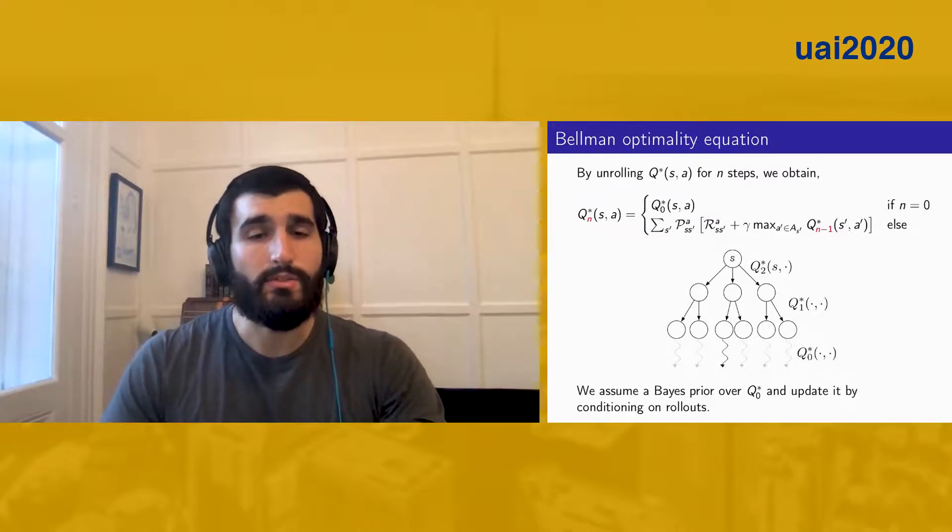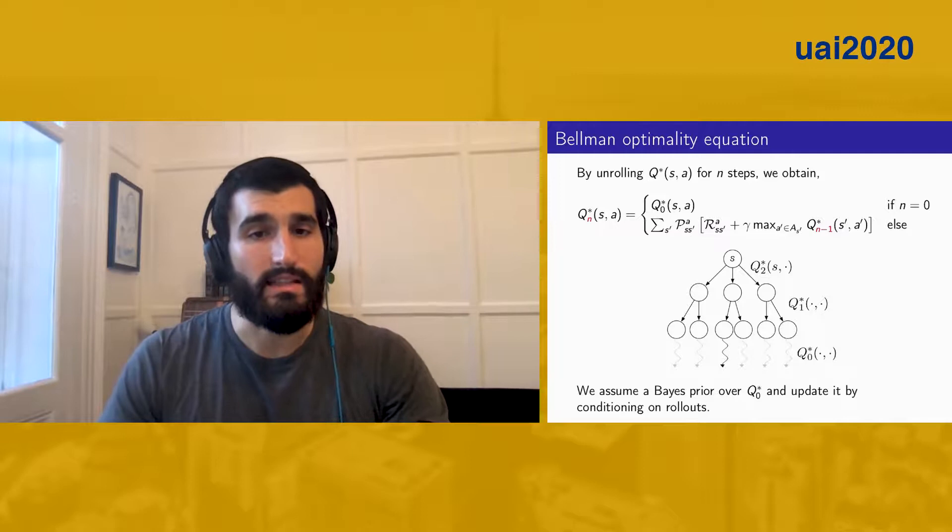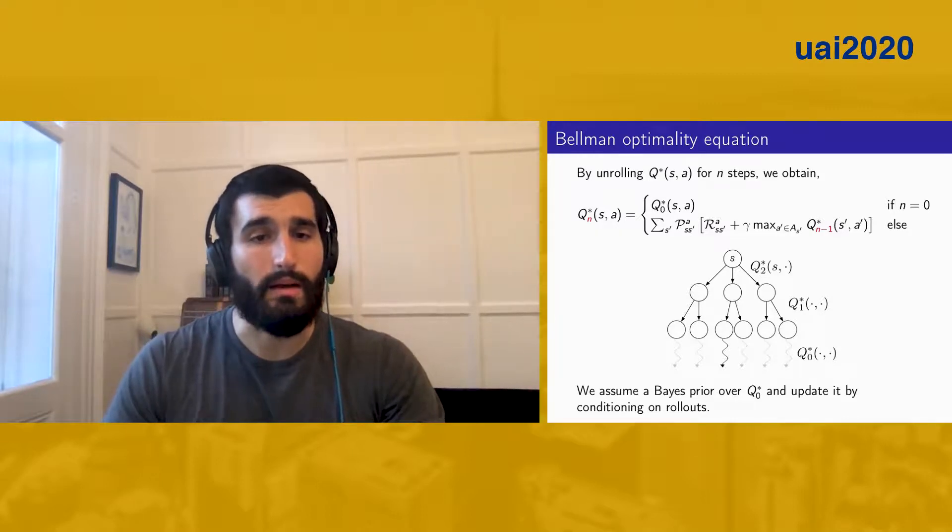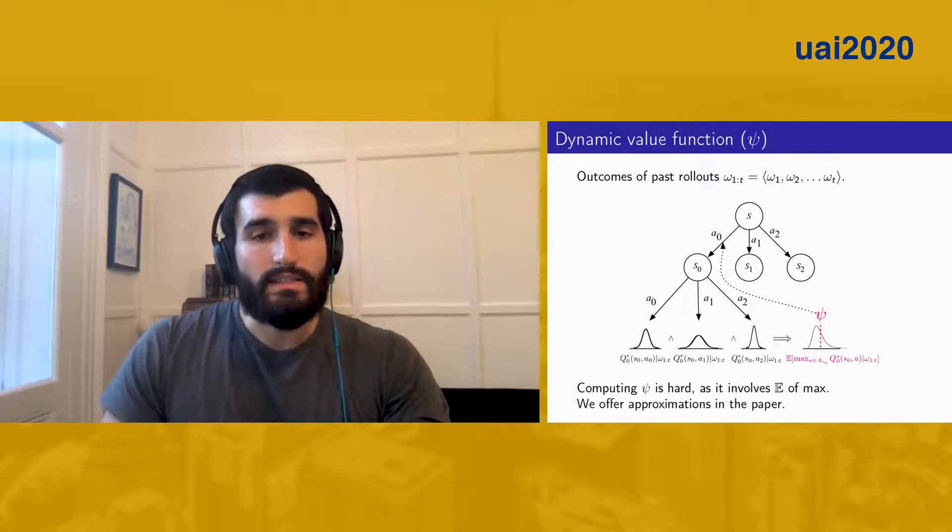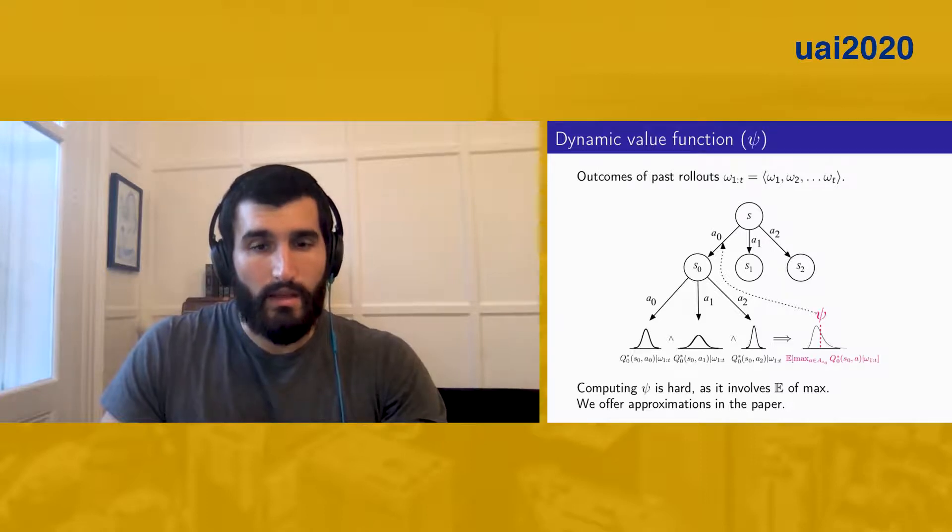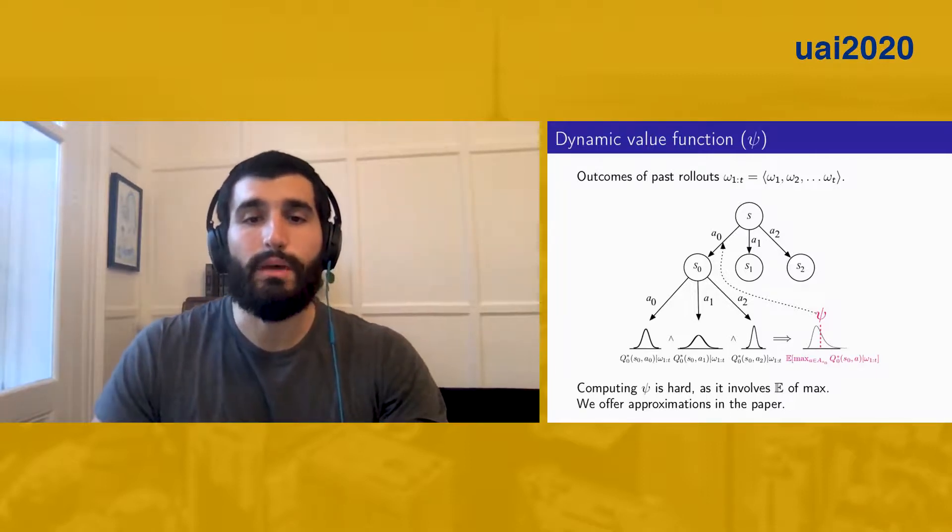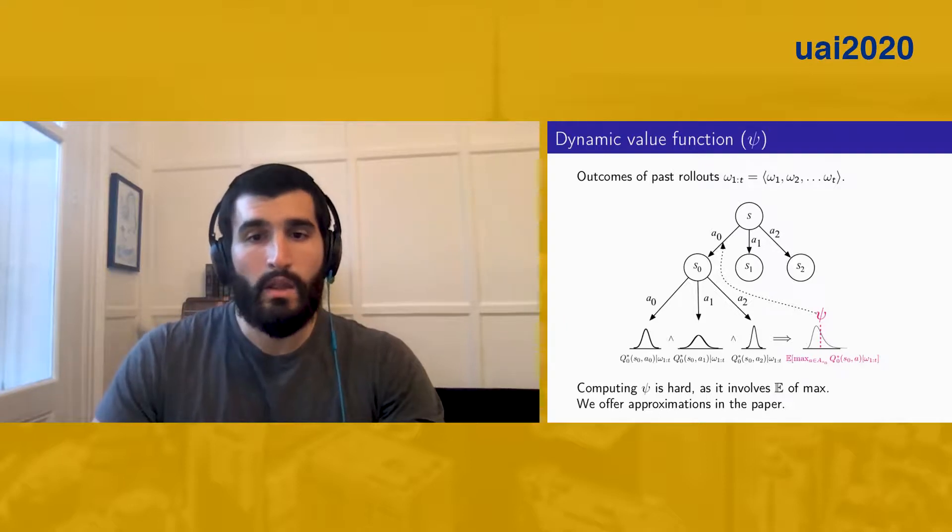And we assume a Bayesian prior over these leaf values and update them by conditioning on rollouts. Assume we're in a simple deterministic MDP, and this is the current state of our search tree. We have some posterior leaf values conditioned on the knowledge state omega 1 to t, which is defined as a sequence of past rollout results. We can then relate these leaf values to the root action values via the n-step equation.